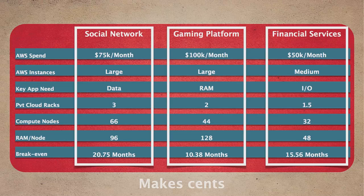We're seeing a new trend where cloud spend is actually substantial, and we can pull people out of public clouds onto their own infrastructure for a smaller spend. I wanted to go over the ROI side of what we're seeing in moving people to a private cloud that can burst publicly. First, a social network — their monthly spend was right around $75,000. Their need was unique: they had large instances. We were able to take them down to three racks from that $75K spend, and their breakeven was at 20 months.